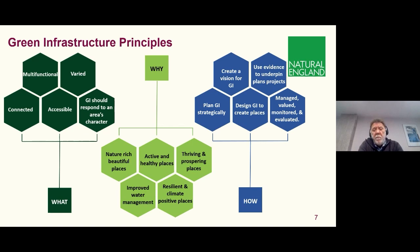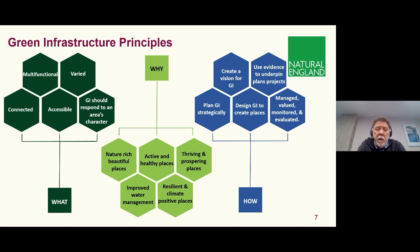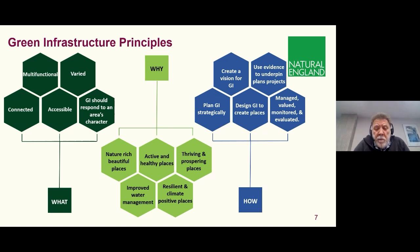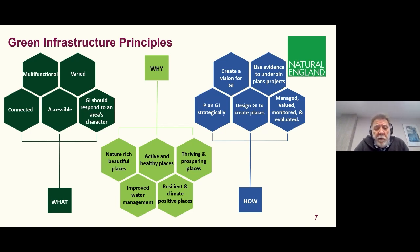The principles are worth just pausing on for a moment. We've got the how, what and why principles — 15 of them. It's a virtuous circle, if you like. We need to think about why we're doing this: we're restoring nature, we want places to be beautiful, we want people to be active and healthy, we want places to thrive. We're very aware nowadays of flood risk, water management, heatwaves and so on, so we want places to be more resilient.